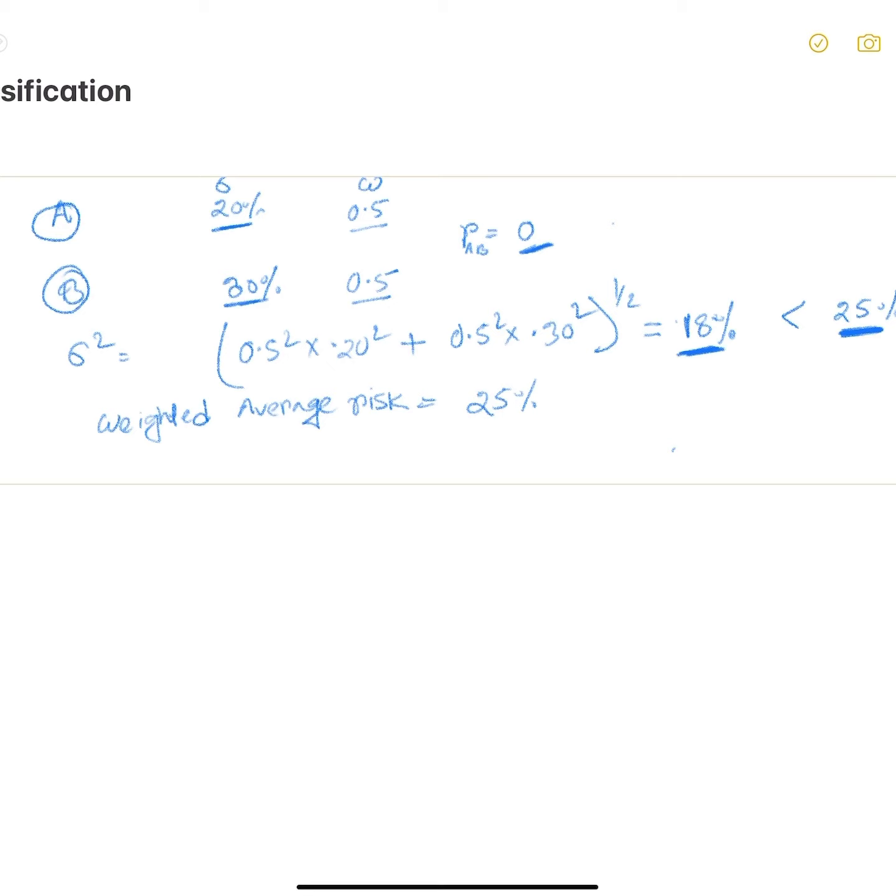So if we randomly select asset A, whose risk is 20%, and our overall portfolio risk is 18%, then 18% divided by 20% means my diversification ratio is 0.9. On the other hand, if we randomly select asset B, our diversification ratio would have been 18% divided by 30%, which equals 0.6.